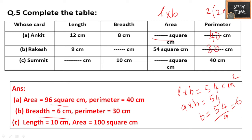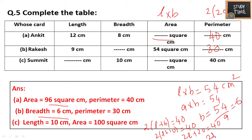For Sumit's card: breadth is 6 and perimeter is 40. Using 2 into (L plus B) = 40, we get 2L plus 2 into 6 = 40, so 2L plus 12... wait — 2L plus 20 = 40, meaning 2L = 20, so L = 10. Therefore the area = 10 into 6 = wait — L is 10, so area = 10 into B = 100 square meters.